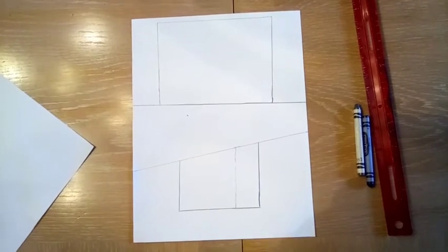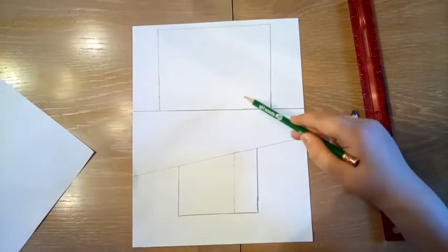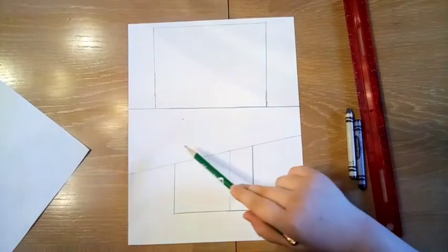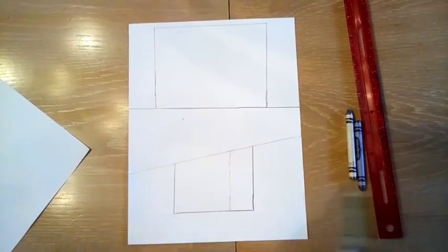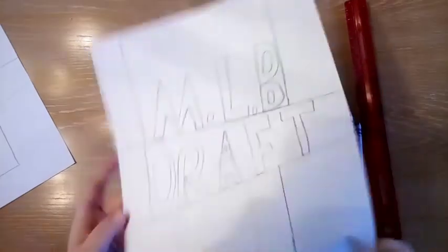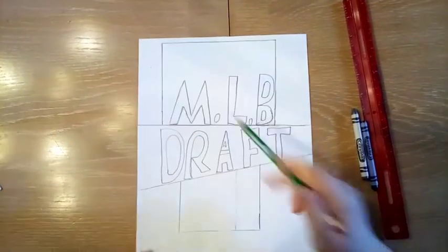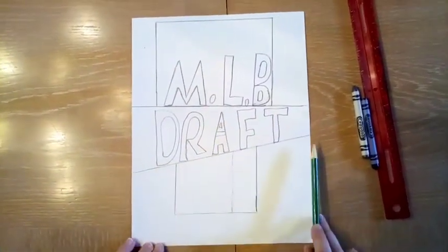Your next step is you're going to write MLB in bubble letters up here and draft in bubble letters here. When you're done with that it should look just like this. You have your MLB here and your draft here.